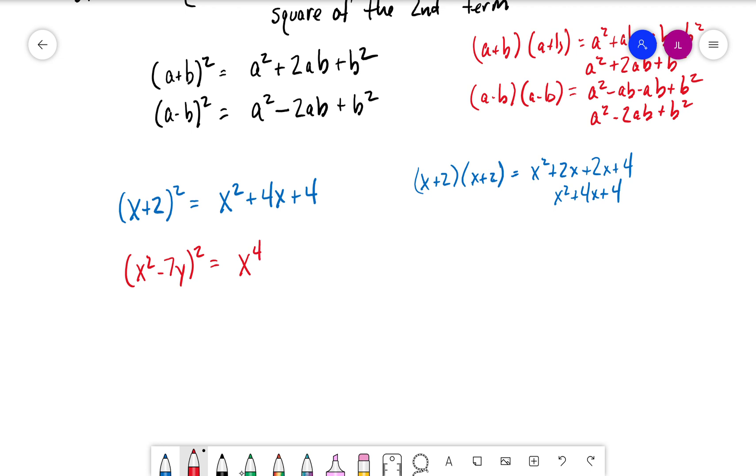Then we have -7y. This is negative, so we're going to have a subtraction sign. -7y times x² is -7x²y. We want to double that: -14x²y. And then (-7y)² is +49y². So x⁴ - 14x²y + 49y².